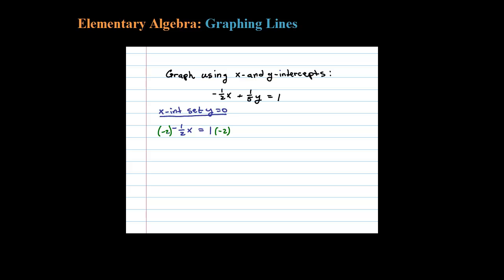Negative 2 times one-half is 1x, positive 1x equals negative 2. So the actual x-intercept as an ordered pair is negative 2 comma 0. To find the y-intercept, that's where we set x equal to 0.